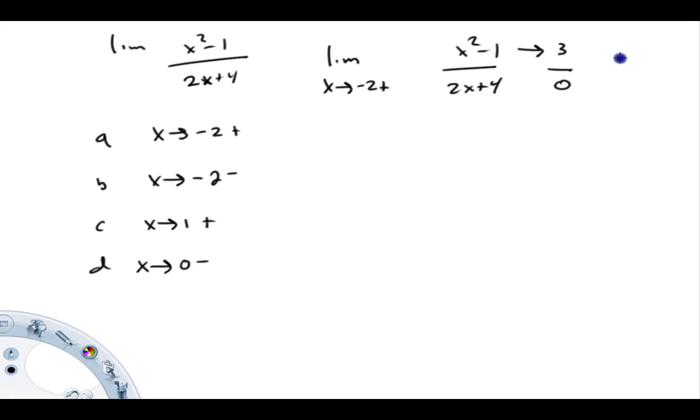So the big question is, is it plus infinity or minus infinity? Now, the numerator, again, as x approaches negative 2, the numerator is going to 3, and that is positive definite. There's no ambiguity there. 3 is a positive value.